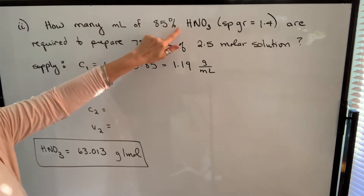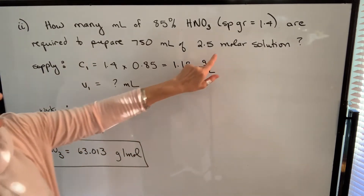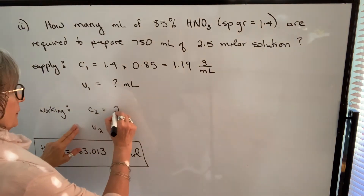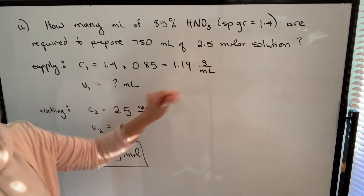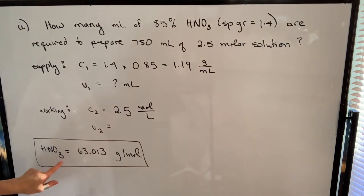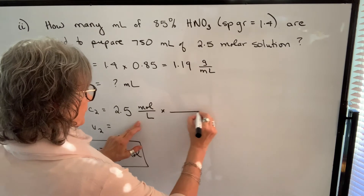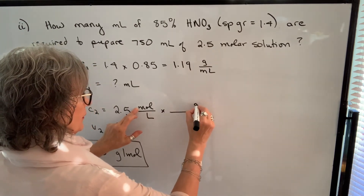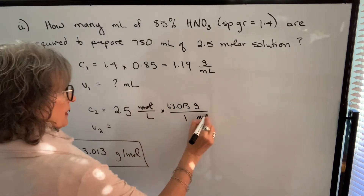We don't know the volume of the supply solution — that's what we're finding, in milliliters. The working solution is 2.5 molar, meaning 2.5 moles per liter. To convert to grams per milliliter, we need the molar mass of nitric acid: 63.013 grams per mole. Using dimensional analysis, we multiply 2.5 moles per liter by 63.013 grams per mole to cancel moles, giving grams per liter. Then we convert liters to milliliters, canceling the liter unit.